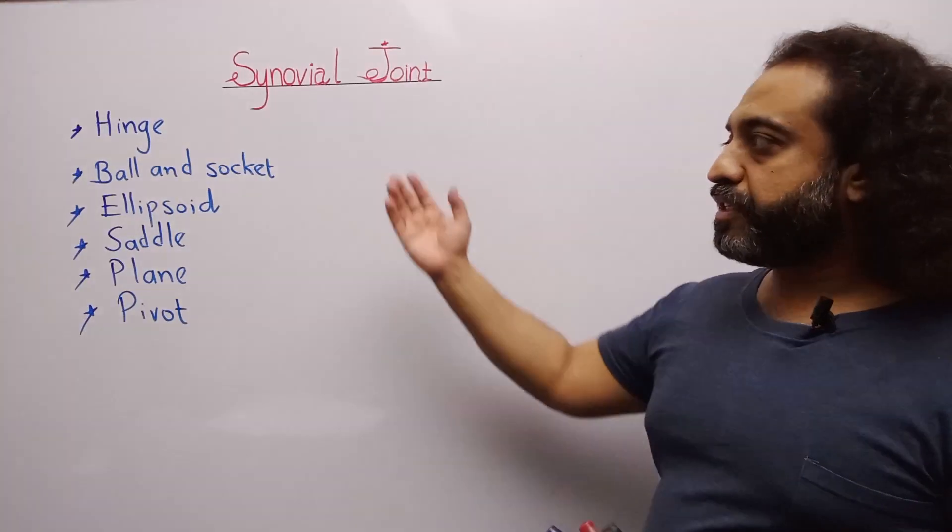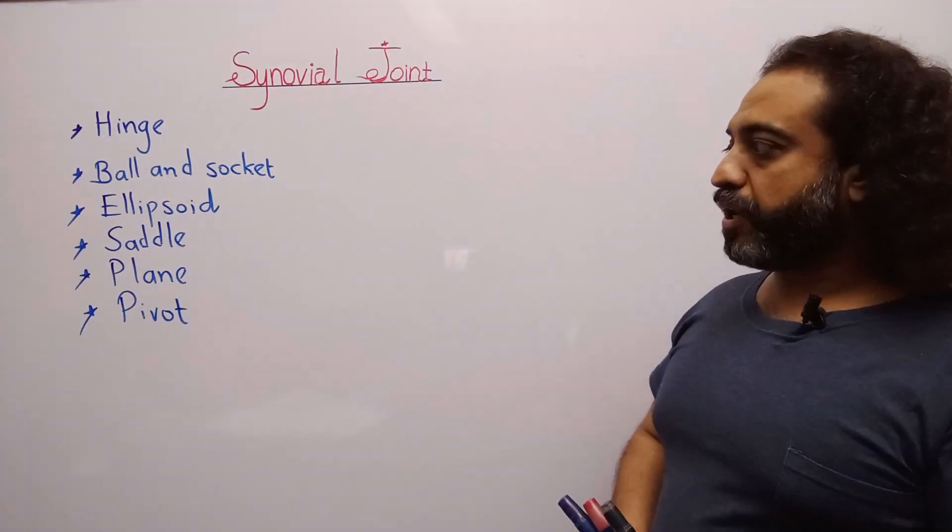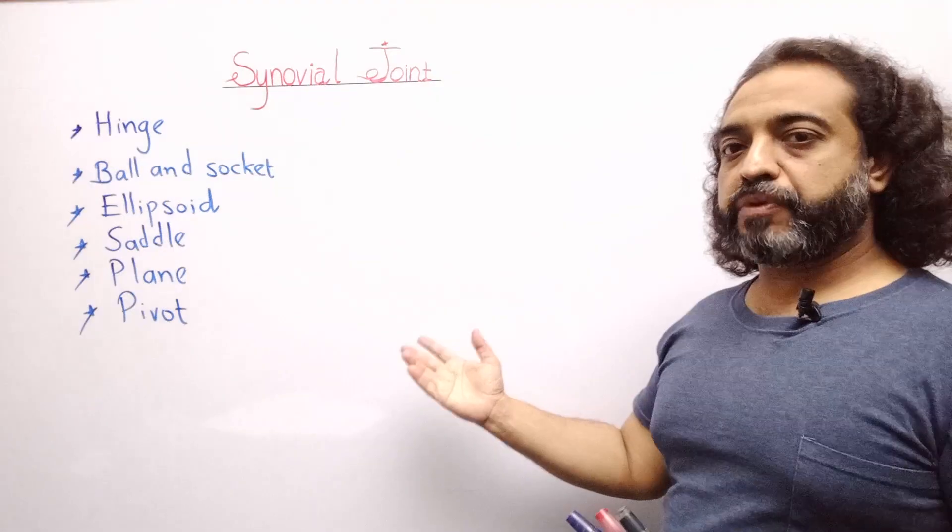Synovial joints are of six types: hinge joint, ball and socket joint, ellipsoid joint, saddle joint, plane joint, and pivot joint.